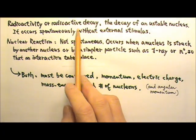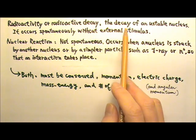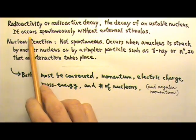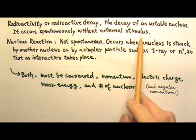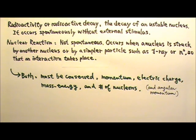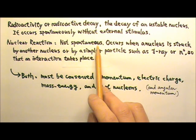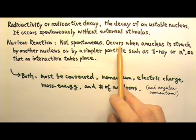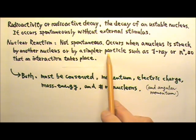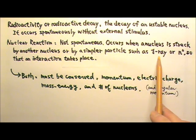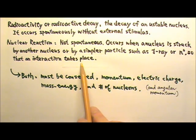Radioactivity, or radioactive decay, is the decay of an unstable nucleus. It occurs spontaneously without external stimulus. On the other hand, a nuclear reaction does not happen spontaneously. It occurs when a nucleus is struck by another nucleus, or by a simpler particle such as a gamma ray photon or a neutron, so that an interaction takes place.